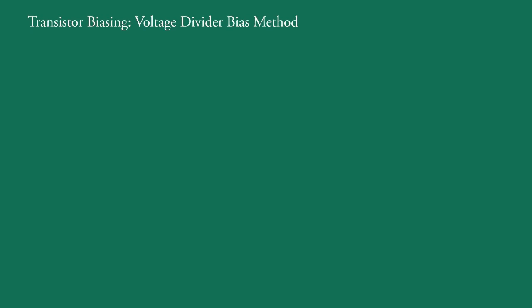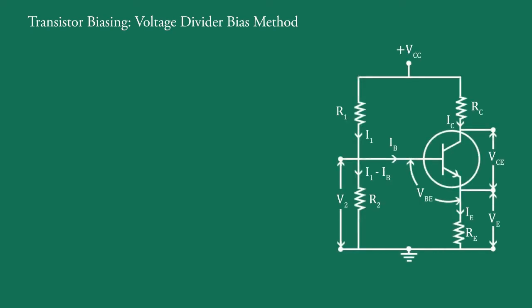Today we will discuss a most important biasing circuit of the transistor, that is voltage divider bias method. The circuit of voltage divider bias method is like this. In this biasing circuit, two resistances R1 and R2 are connected across the supply voltage VCC.